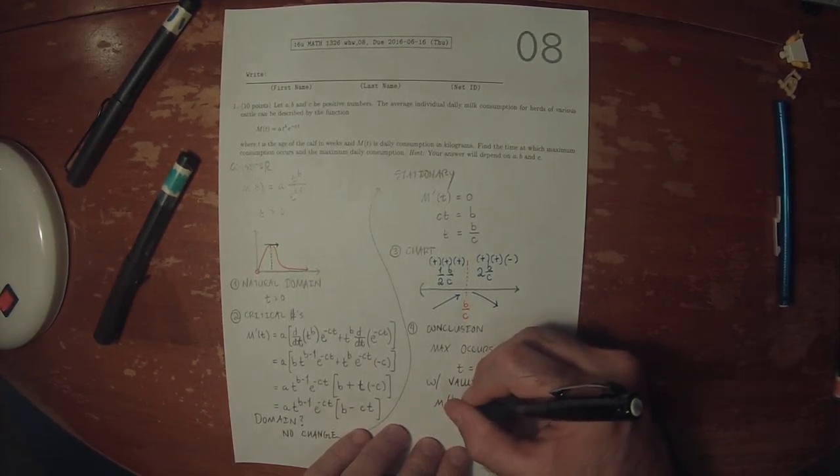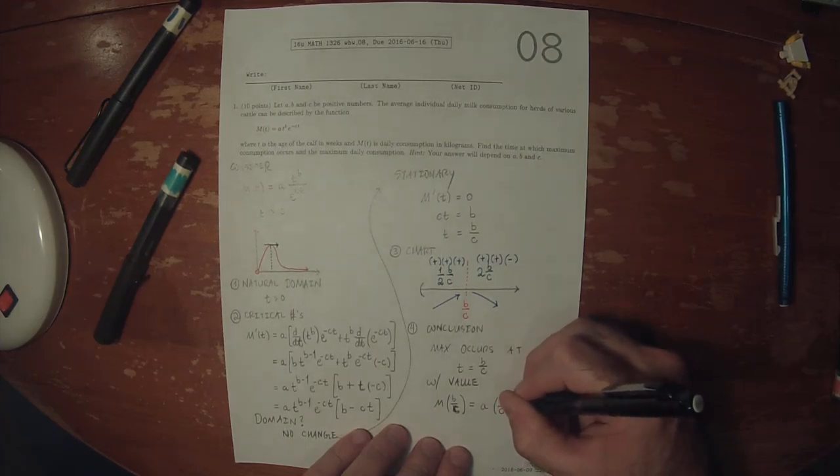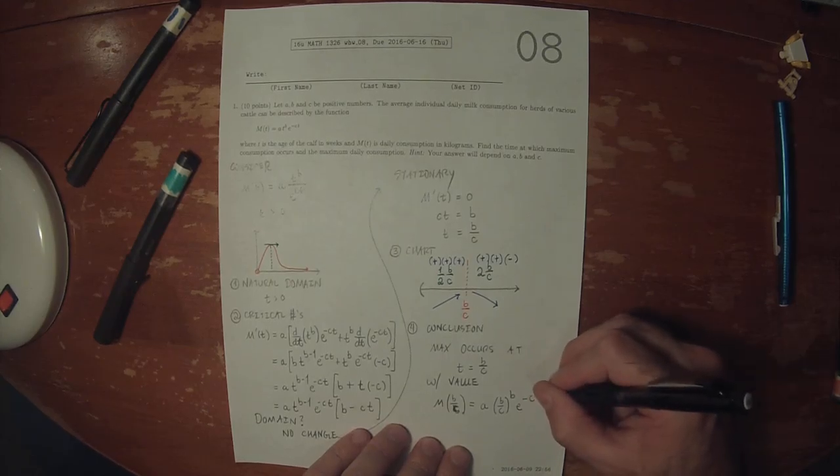So M of B over C is A multiplied by B over C to B, exponential of negative C times B over C.